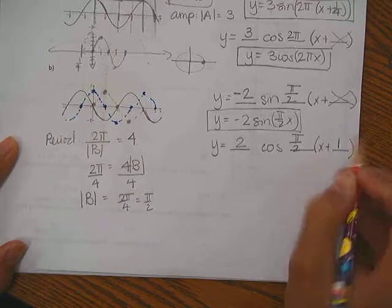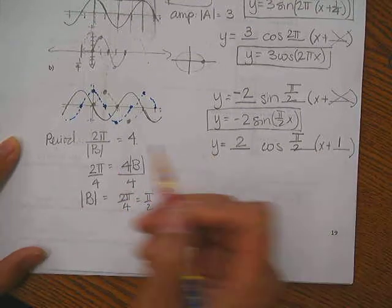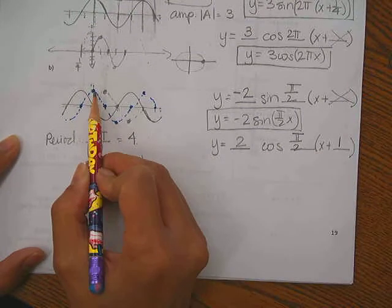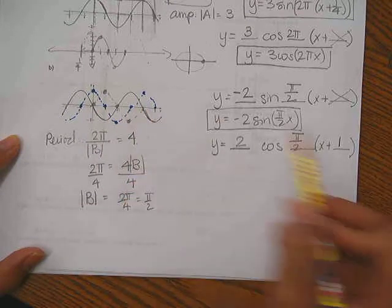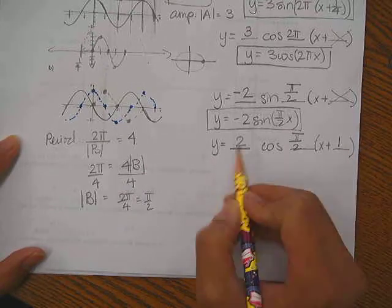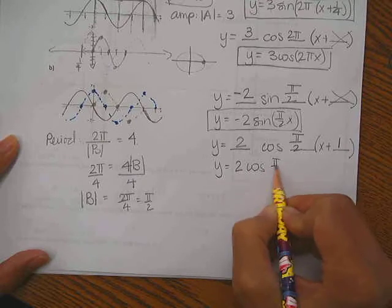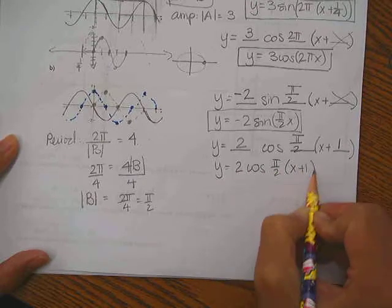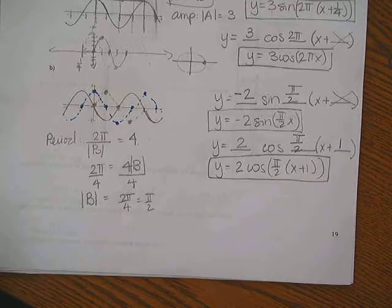Or you can even write another one. You can say, you know what? I can actually go to the right by 4. So you can go in here and it's x minus 4. And that's going to be okay too. So this is one of the many, many cosine functions that we can formulate with this particular graph.